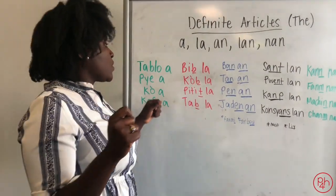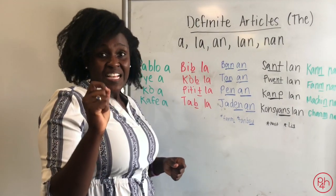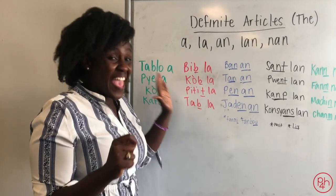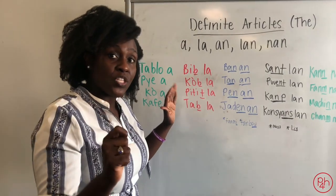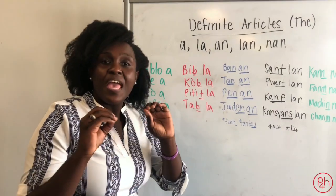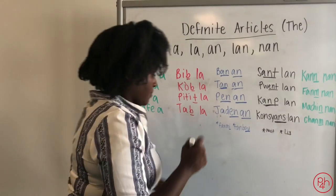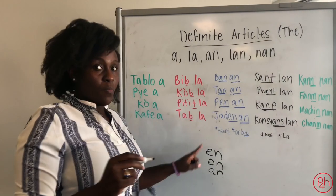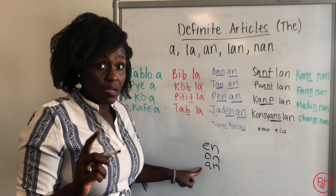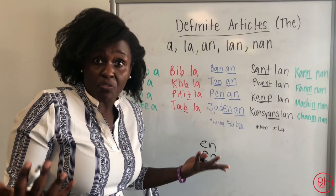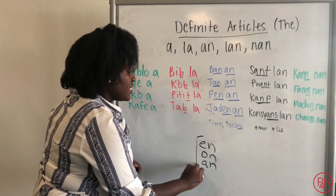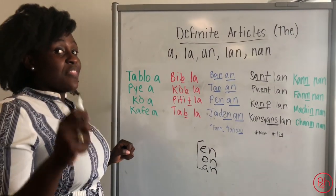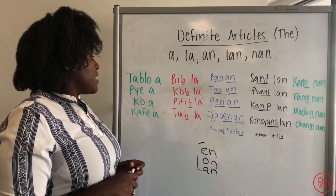You will use A as the definite article when you have a word that ends in a non-nasal vowel. Basically, if it ends in a vowel that isn't the nasal vowels — in the Haitian alphabet, those are en, on, and an — those are considered nasal vowels. So if a word ends in a vowel, there's a very good chance you're going to use A. Just make sure it is a non-nasal vowel.